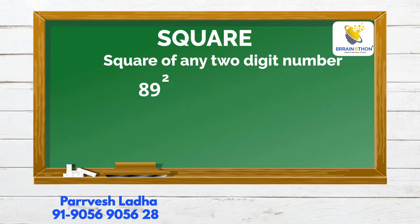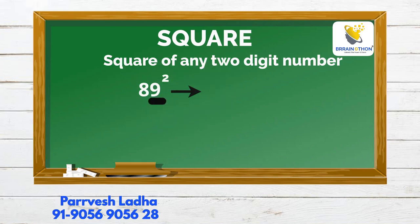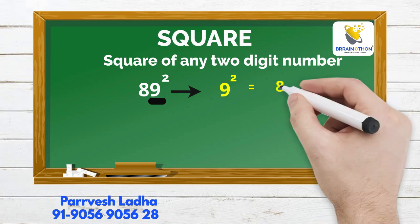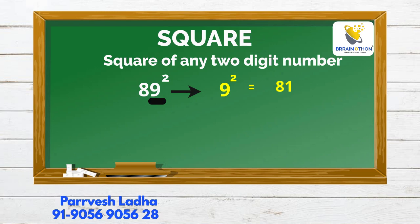Now we take a new example: 89-squared. First, we square the units digit: 9-squared is 81. We write 1 and carry 8.